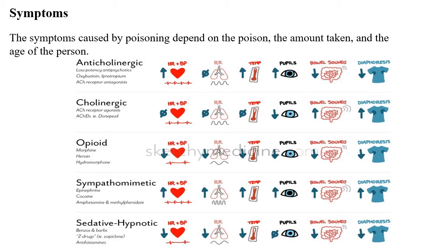When a patient is poisoned, we need to identify the type of poison from the symptoms. For example, anticholinergic drugs produce: increased heart rate, increased temperature, increased pupil size, decreased bowel movement, and decreased sweating. Cholinergic drugs produce exactly opposite symptoms. Opioid and sympathomimetic drugs each have their own characteristic symptom profiles.